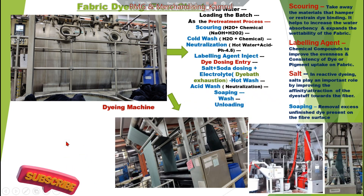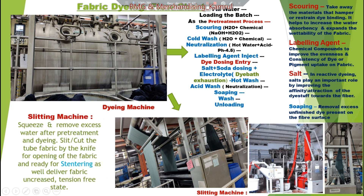After dyeing, the fabric is sent to the slitting section. In the slitting machine, squeezing happens to remove excess water and excess dye from pre-treatment. If tubes were joined during batching, there is a knife at the top of the machine — the slitter cuts the tube fabric to open it into flat, open-width fabric, which is then delivered in an uncreased, tension-free way to the next section.